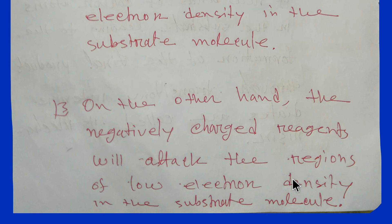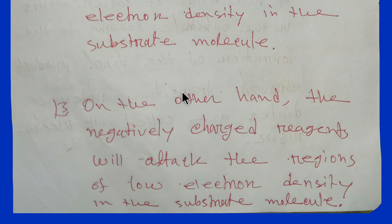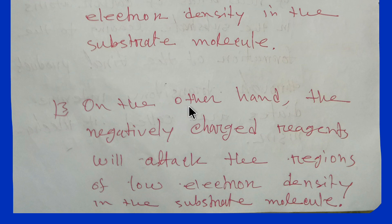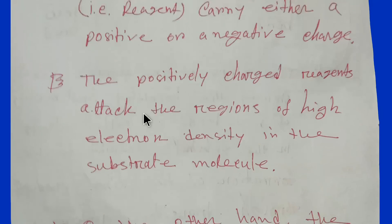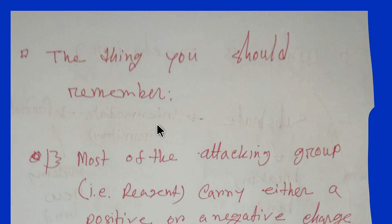Let me remind you of what you have learned today: what is reagent, what is substrate, what is mechanism, what is a transitory intermediate, what is product and how it is formed, and how reagent attacks the substrate. That's all about it.